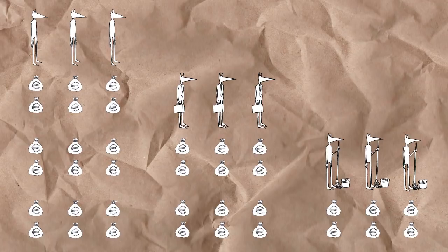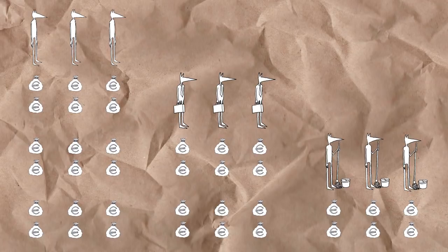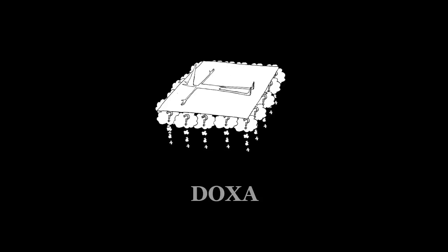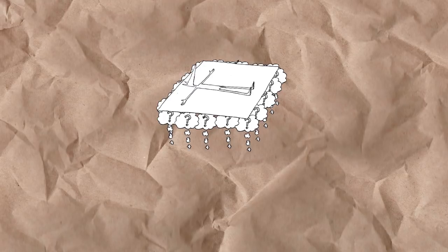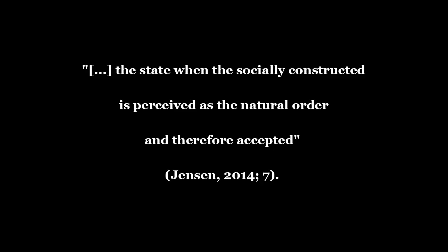Doxa. Another dynamic that structures a field is doxa. Doxa refers to the underlying and unquestioned opinions, beliefs and assumptions which are commonly held in a field. In Jensen's words, doxa is the state when the socially constructed is perceived as the natural order and therefore accepted. Doxa supports the classifications and power relations within a field.